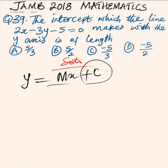So all we need to do here is to rewrite the expression we have here, 2x minus 3y minus 5 equal to 0, and arrange it to this form.